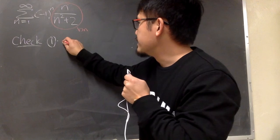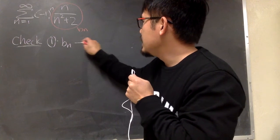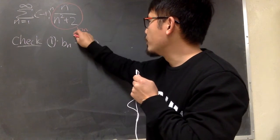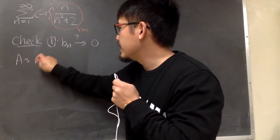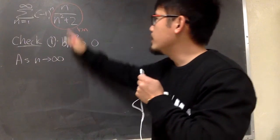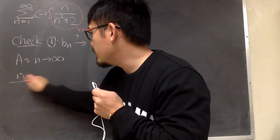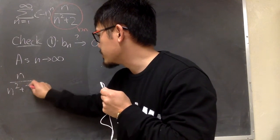Two things to check. First one, as n goes to infinity, I want to see if bn approaches 0 or not. So let's do this first. As n goes to infinity, we just look at this and we put it down: n over n squared plus 2.